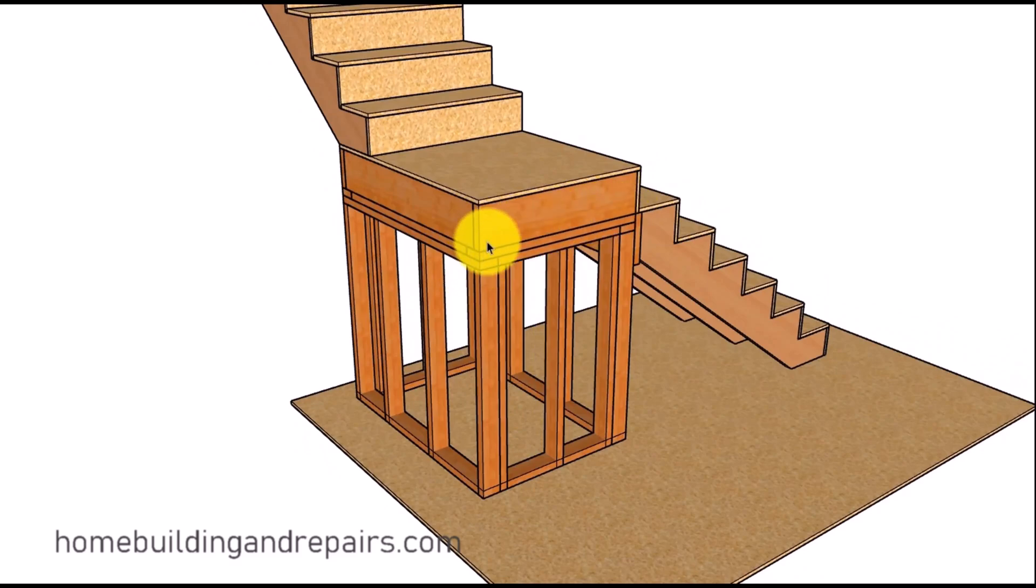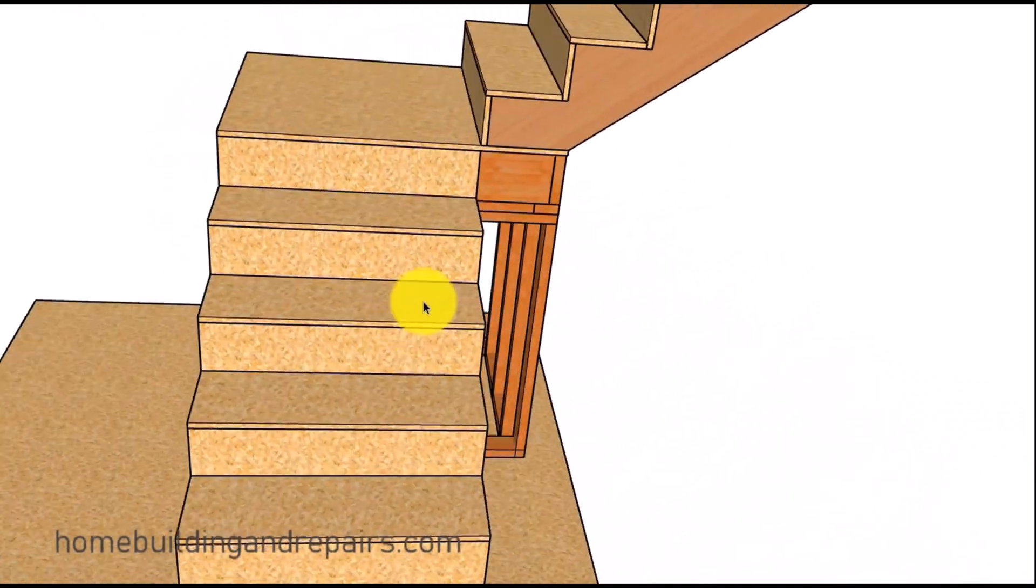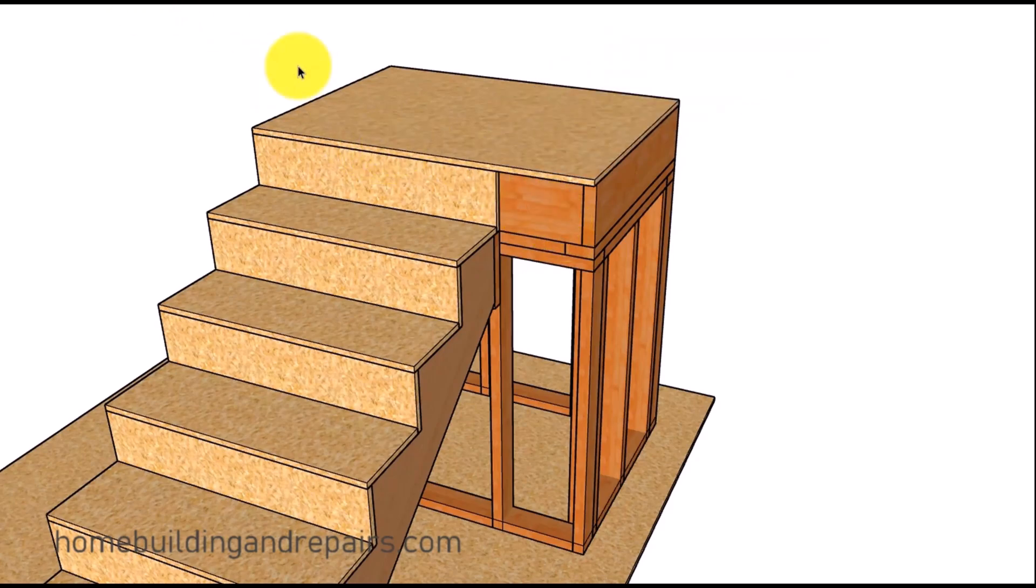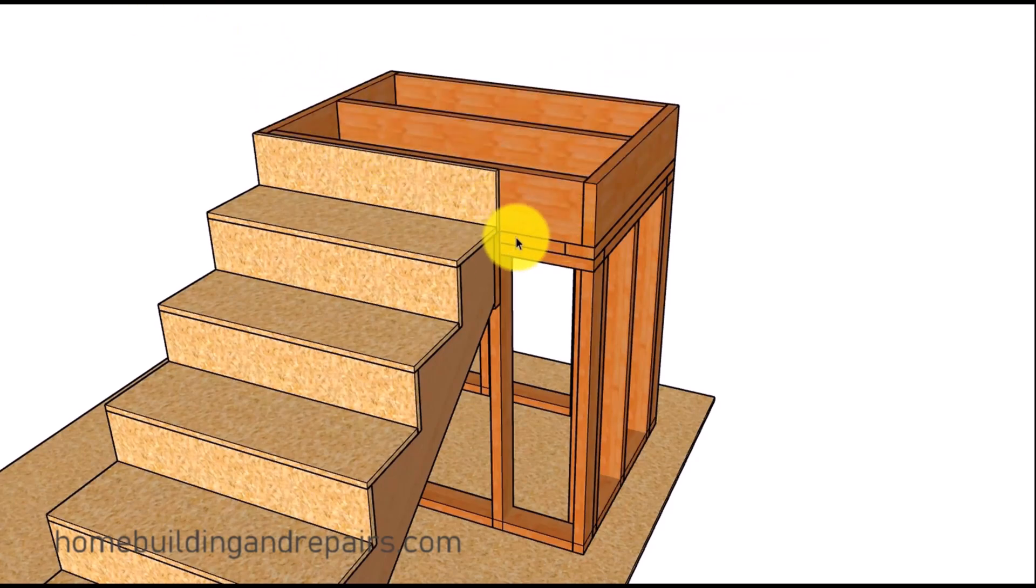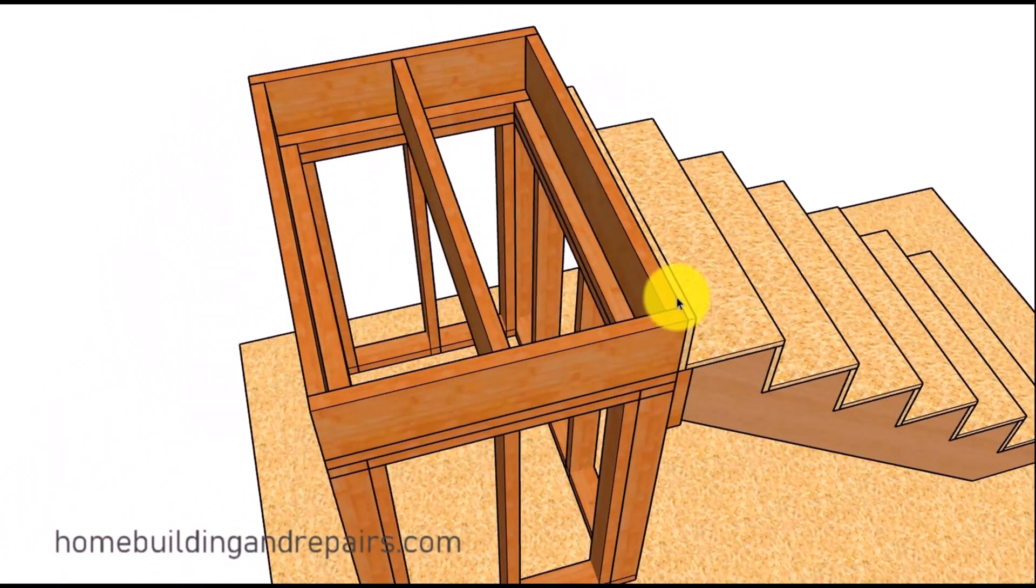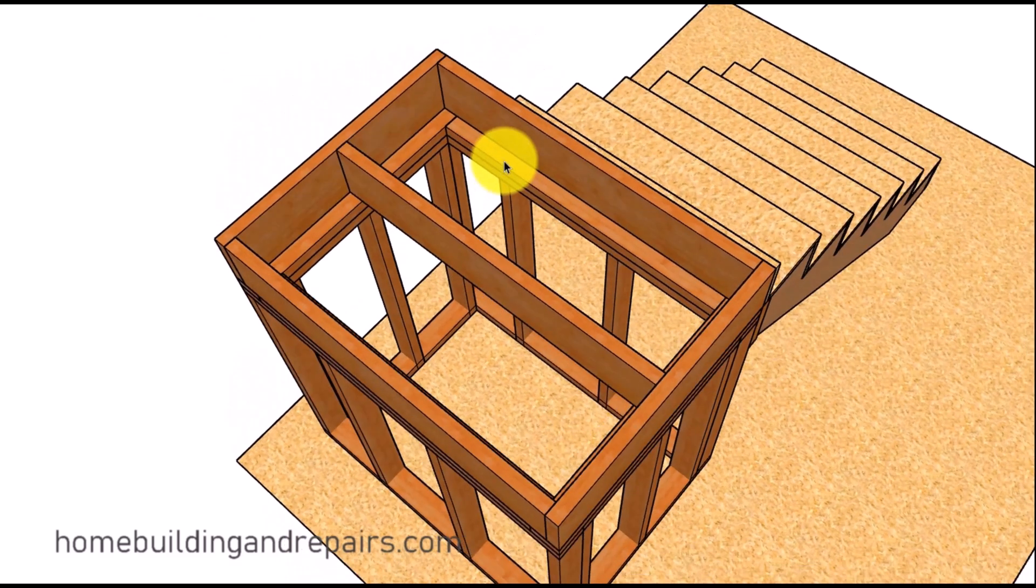Number one, framed walls usually provide an excellent framework that can easily support the weight of the landing, people, and any furniture or other objects placed on it. This is especially important for landings that experience heavy traffic in commercial or industrial buildings. The walls also distribute the weight of the landing more evenly across the foundation, preventing structural load concentration and potential sagging or failure.